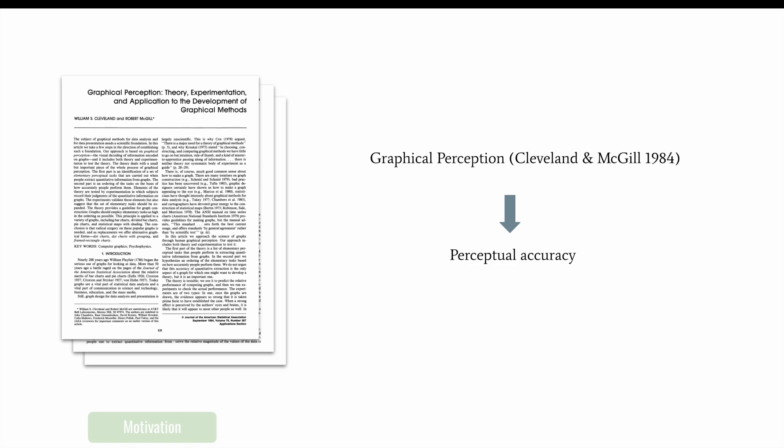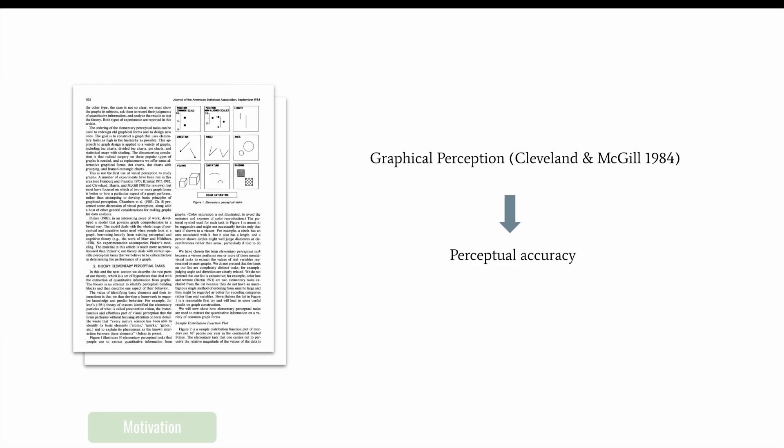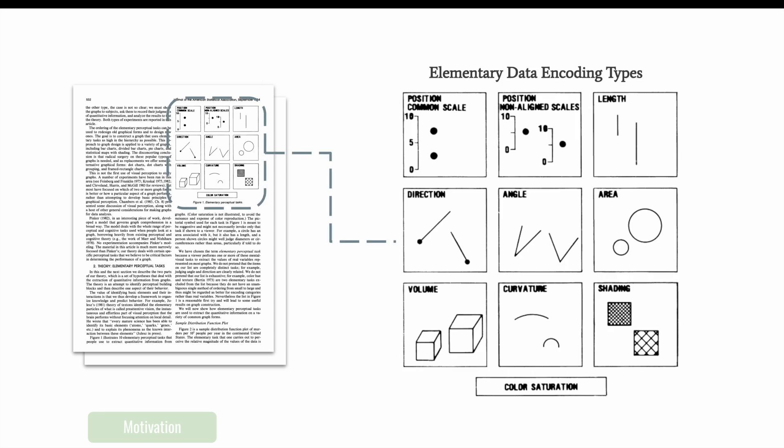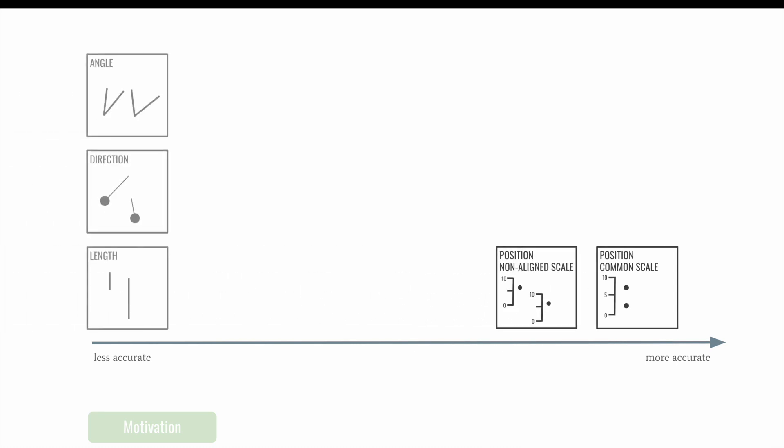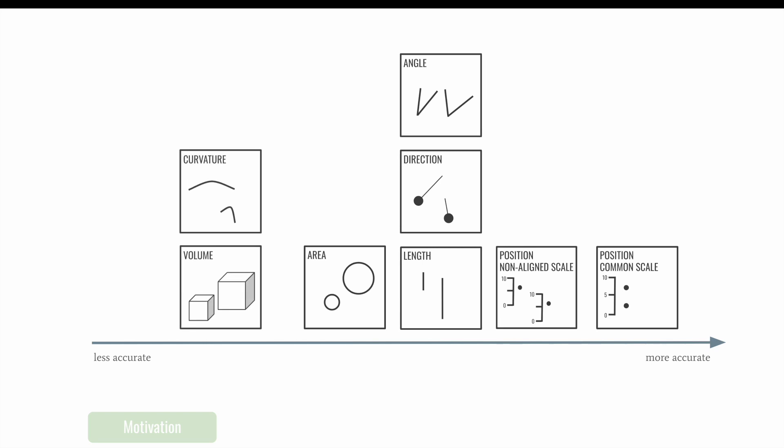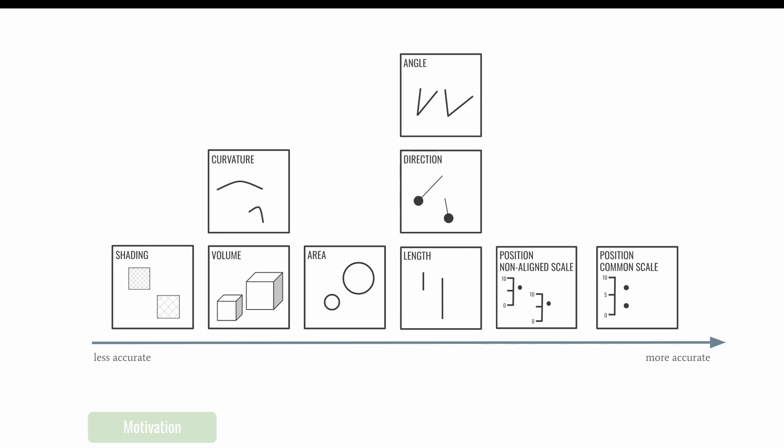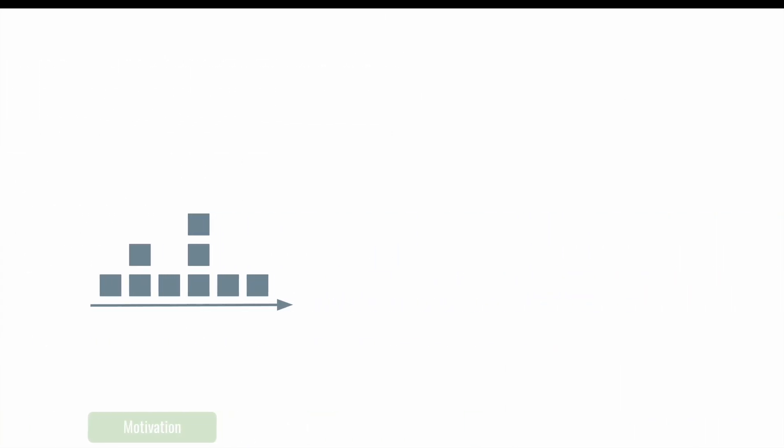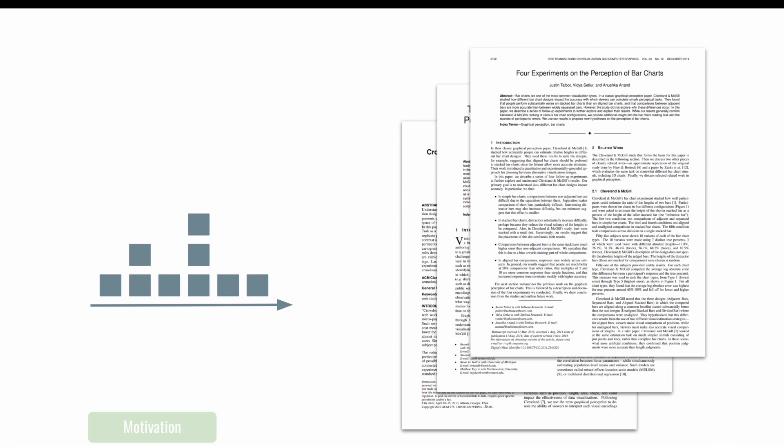Our work builds upon seminal work on graphical perception by Cleveland and McGill. They studied how accurately people are able to characterize data using nine different elementary graphical encodings. They found that people are more or less accurate at perceiving relationships among data depending on how the data is graphically encoded. This ranges from being the most accurate when data is encoded as positioned along a common scale, ranging to least accurate when data is encoded as graphical shading. Numerous replication studies and variations of Cleveland and McGill's work have since been conducted and validated their findings. Hence, what we know about visual perception has been built upon these stable empirical building blocks.